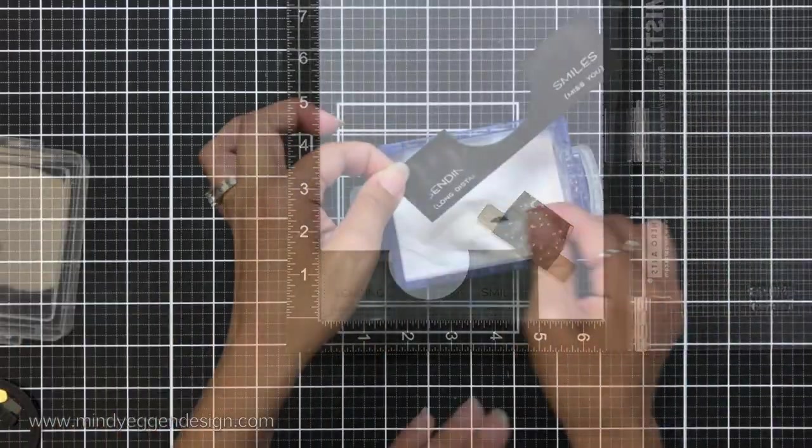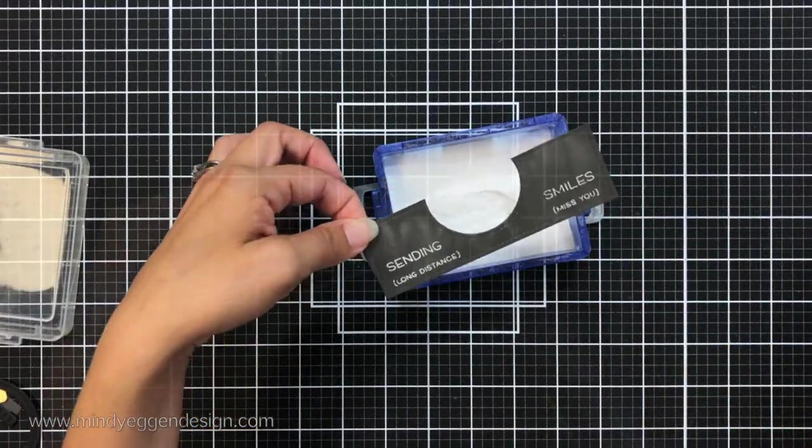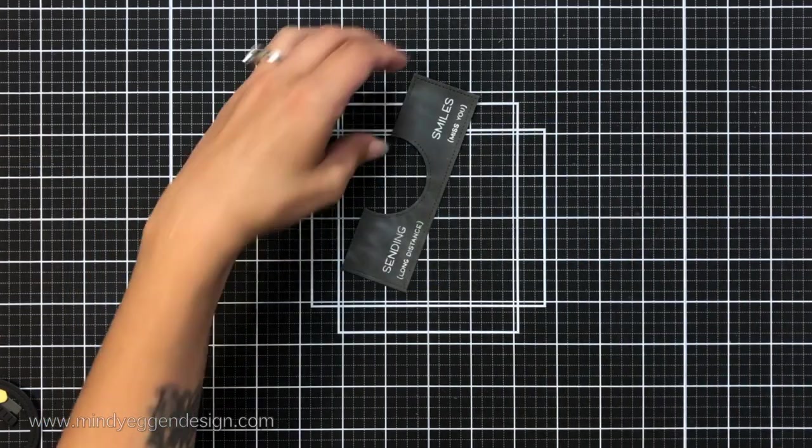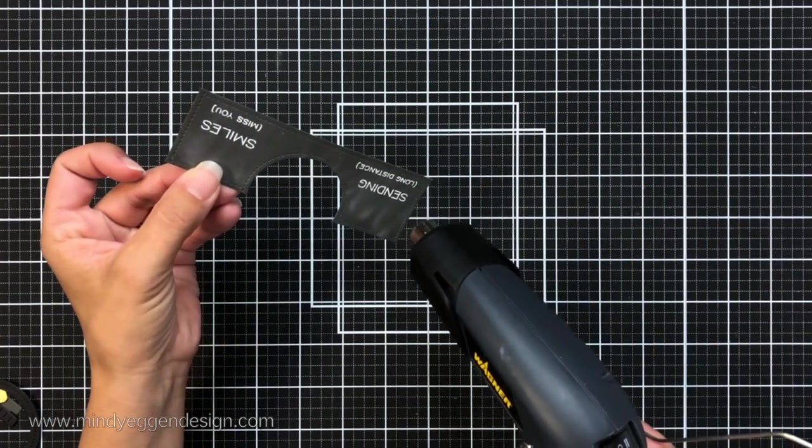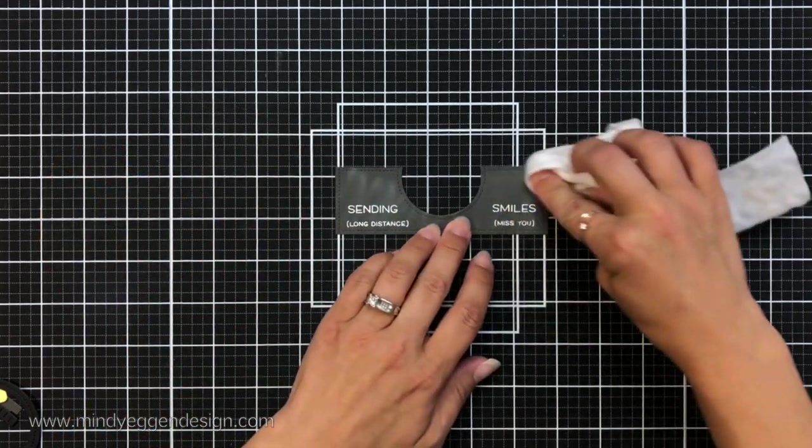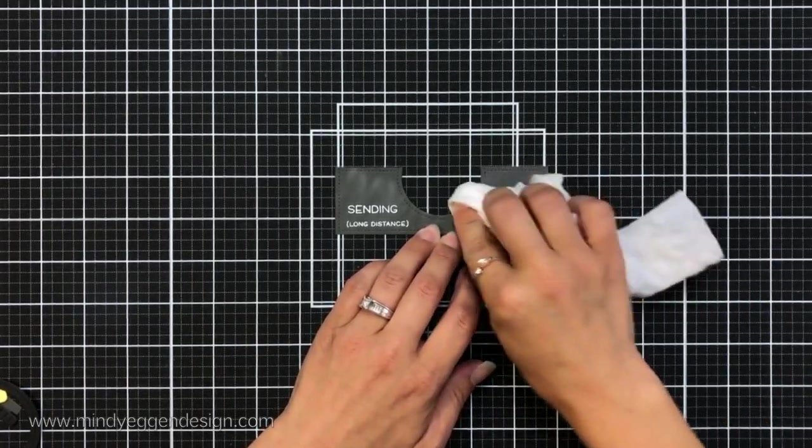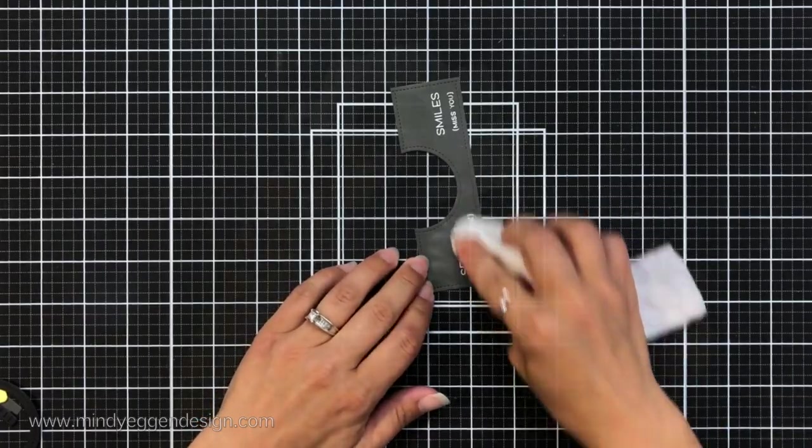Once I have that stamped down I'll sprinkle on the Lawn Fawn white embossing powder and then I'll heat set that with my heat tool. The heat tool is just melting that embossing powder and really makes it stand out against that dark background. Then what I like to do is once that's cooled off I'll take a Swiffer cloth and just kind of dust off any of that excess powder.